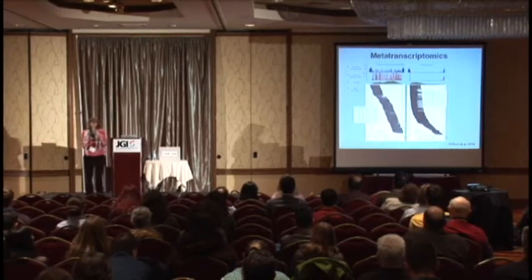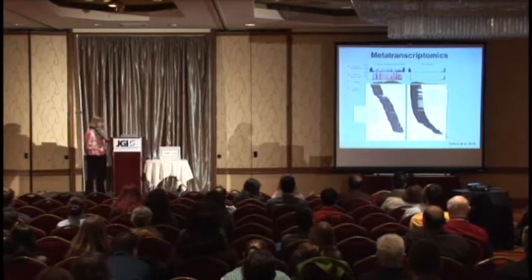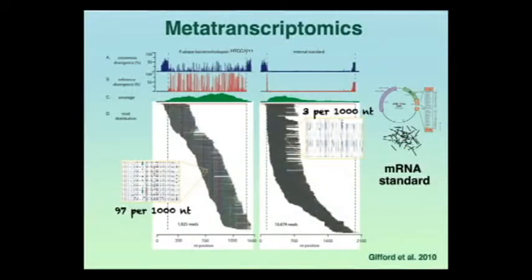Here's a quick view of what the sequencing data from a sample looks like. On the right is our internal standard, showing coverage across that gene — each black line is one read — and it also lets us estimate the sequencing error rate, about 3 per 1,000. For a real gene, these are 1,800 reads all mapping as closest hits to a single proteorhodopsin gene in a SAR-11 marine bacterium. The different colors indicate differences from the consensus sequence, about 97 per 1,000, giving an idea of population variability within these gene bins and distinguishing real variability from sequencing error.